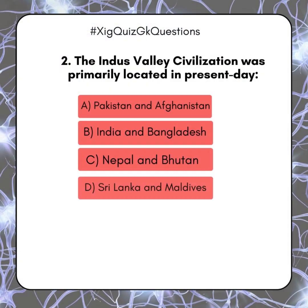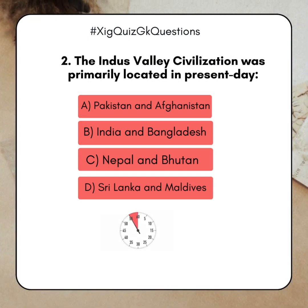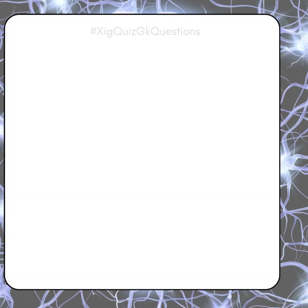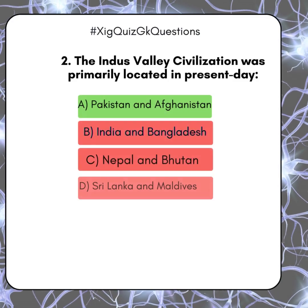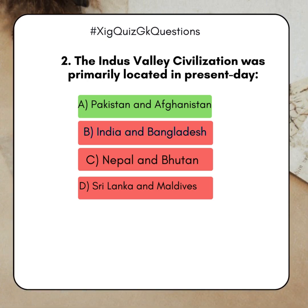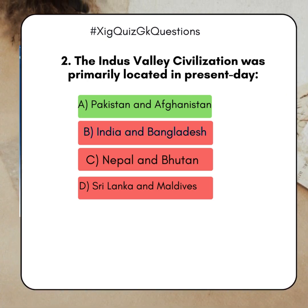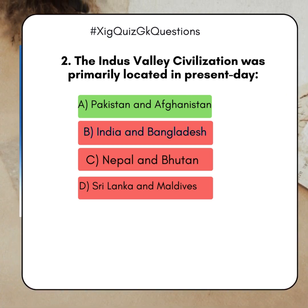The Indus Valley civilization was primarily located in present-day: A. Pakistan and Afghanistan. B. India and Bangladesh. C. Nepal and Bhutan. D. Sri Lanka and Maldives. Answer: A. Pakistan and Afghanistan.